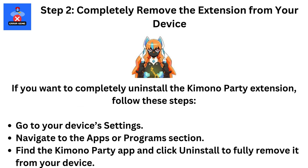Step 2: Completely remove the extension from your device. If you want to completely uninstall the Kimono Party extension, follow these steps. Go to your device's settings, navigate to the Apps or Programs section, find the Kimono Party app, and click Uninstall to fully remove it from your device.